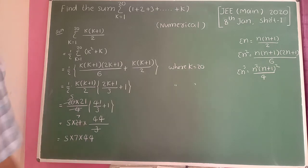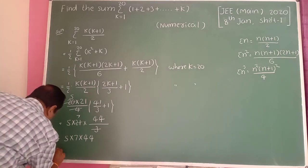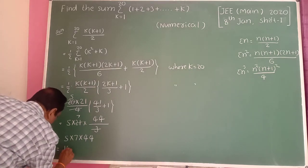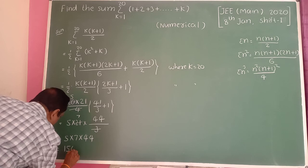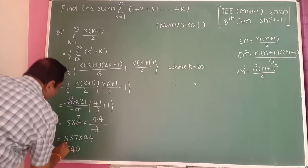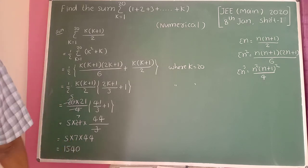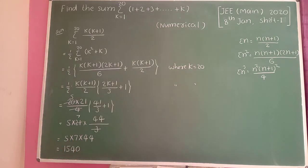Simplifying: 5 into 21 into 44, with LCM giving 3 plus 41 equals 44. After cancellation: 5 into 7 into 44 equals 1540. This is the final answer.